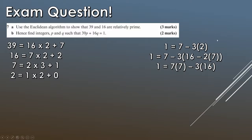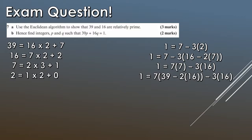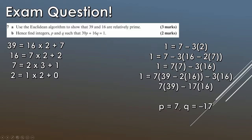We substituted on the right first, so now we substitute for this 7. Notice this immediately takes us to the first line of our Euclidean algorithm, so the question is basically finished. We substitute: 7 equals 39 minus 16 times 2. So 1 equals 7 times (39 minus 2 times 16) minus 3 times 16. Simplifying: 7 times minus 2 gives minus 14 lots of 16, plus minus 3 lots gives minus 17 lots of 16. And we still have 7 times 39. So P equals 7 and Q equals minus 17.